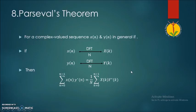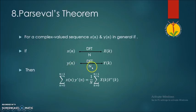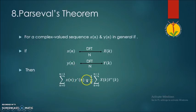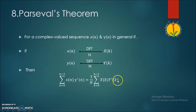The eighth property is Parseval's theorem. For complex-valued sequences x(n) and y(n) with N-point DFTs X(k) and Y(k) respectively, the summation from n=0 to N−1 of x(n)·y*(n) is equal to 1/N times the summation from k=0 to N−1 of X(k)·Y*(k), where Y*(k) is the complex conjugate of the DFT of y(n).